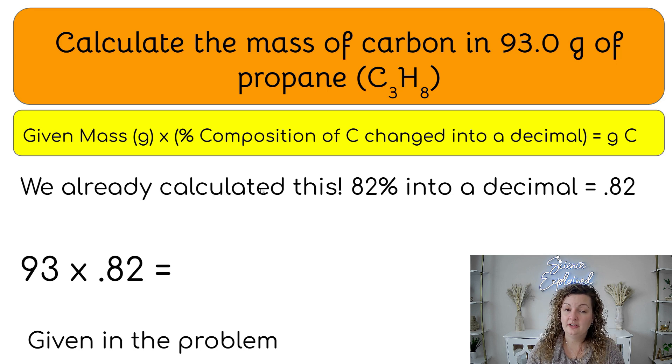So we did already calculate the percent composition for carbon and it was 82%. If we go ahead and divide that by a hundred, that puts it back into a decimal for us, which is just 0.82. So this is the number we're going to be using for our math.